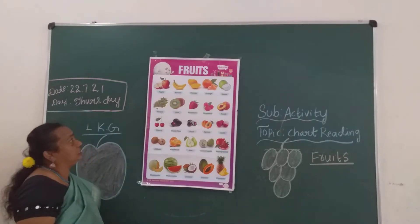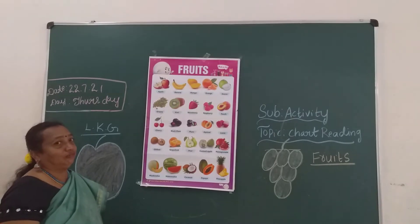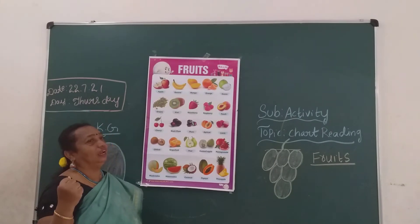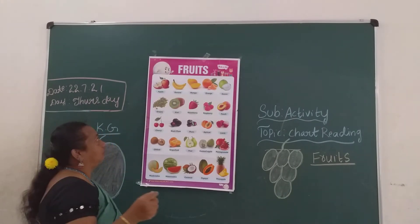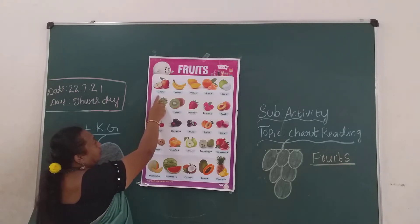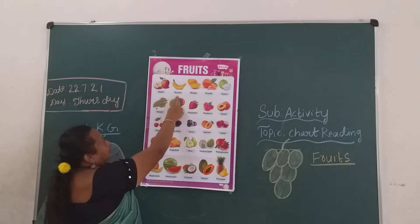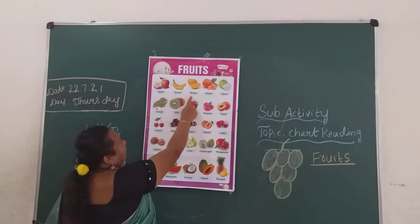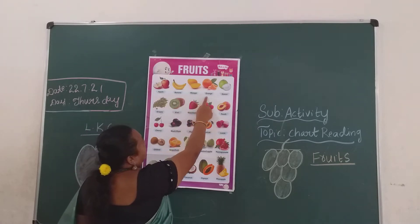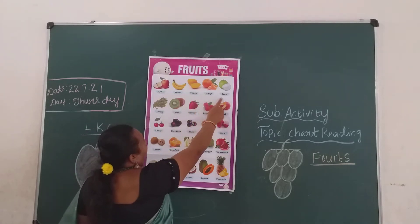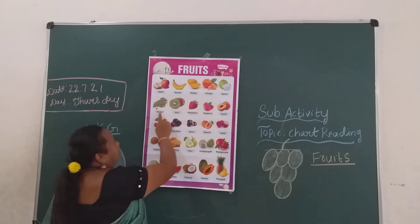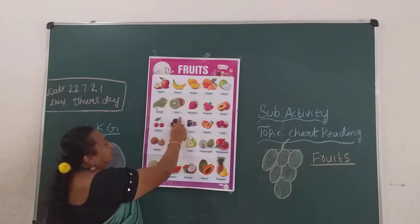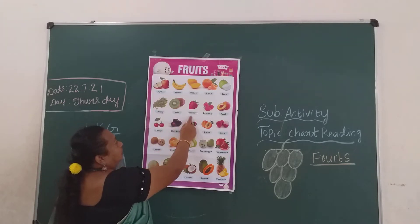What is this, children? You like fruits, no? It is good for our health. What is this? Apple, banana, mango, orange, grapes, kiwi, strawberry.